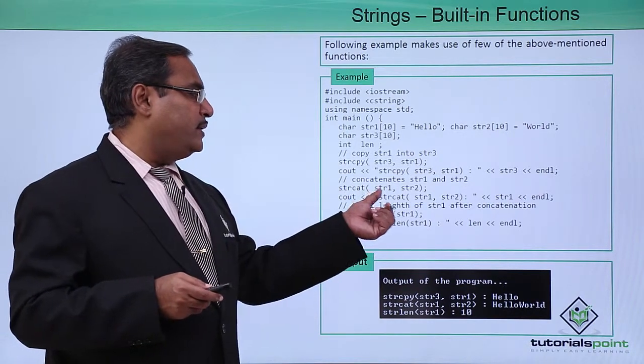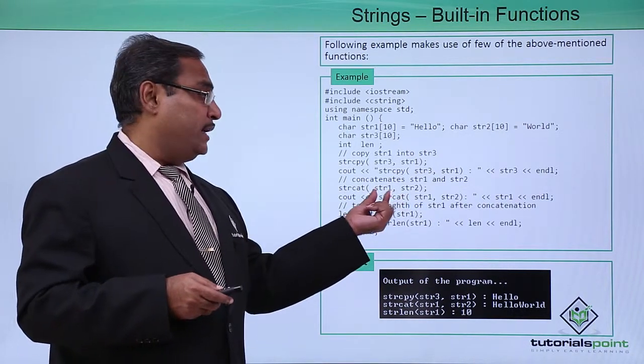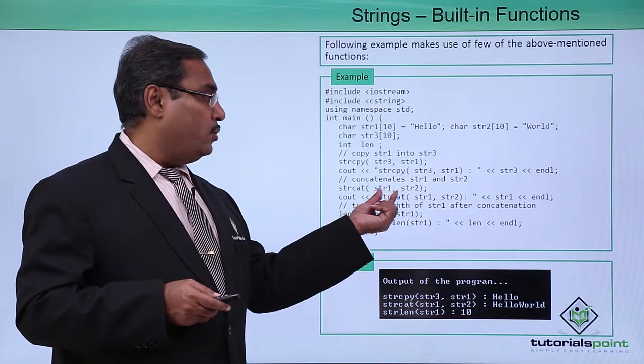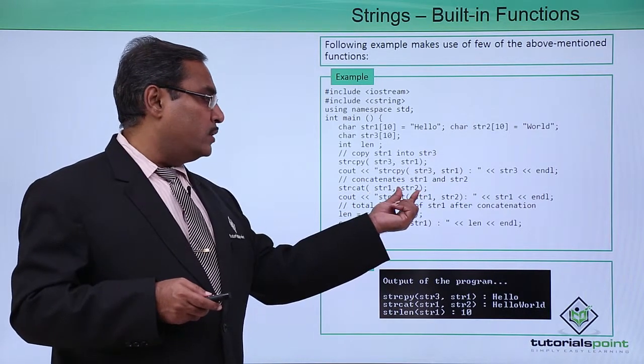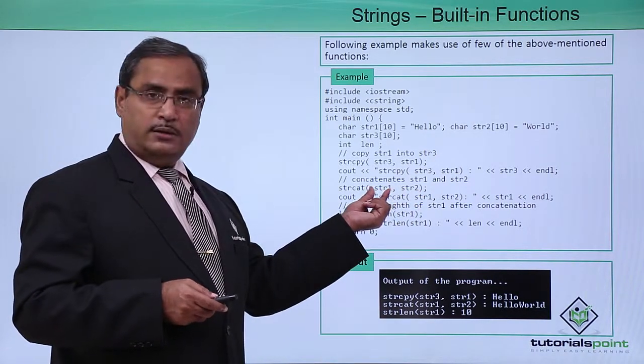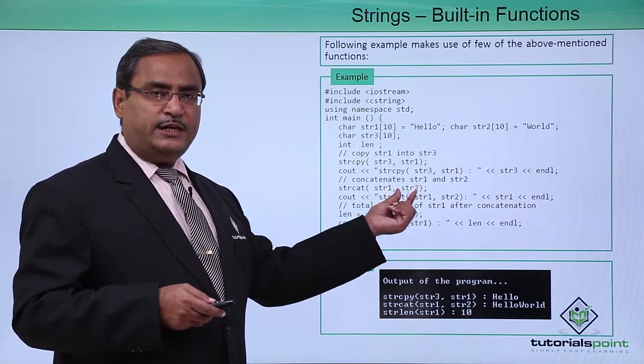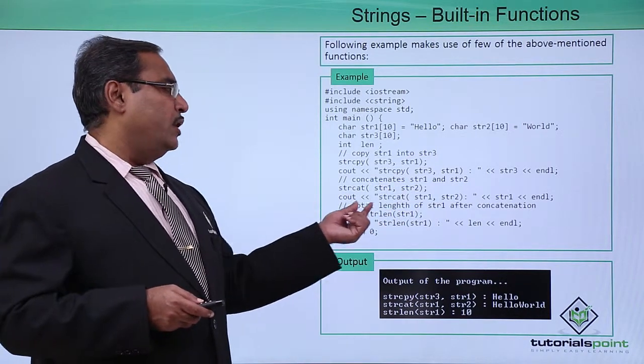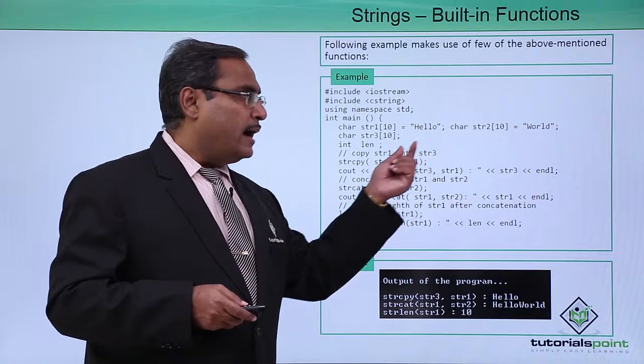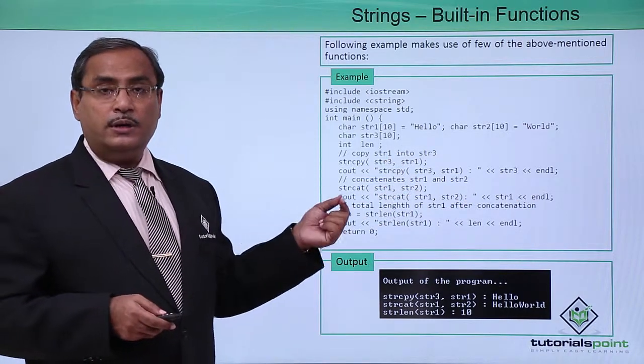strcat str1 str2 - str1 is containing hello and str2 is containing world. Now at the end of str1, str2 will be concatenated. Now if I print str1 I am suppose to get this hello world as output.